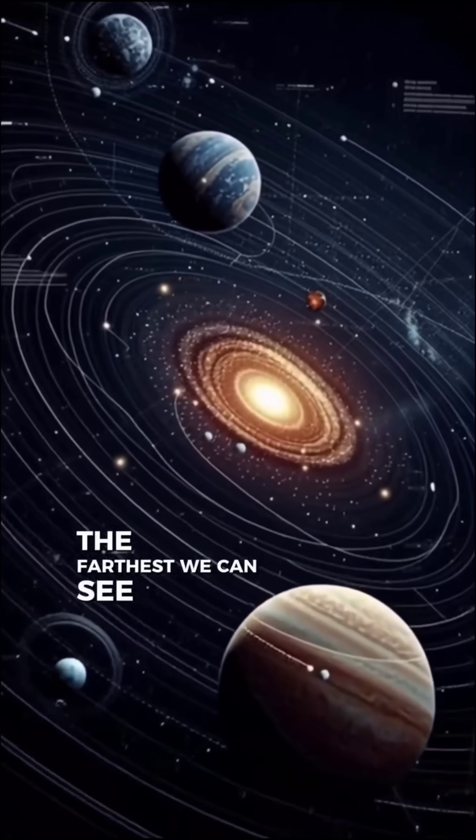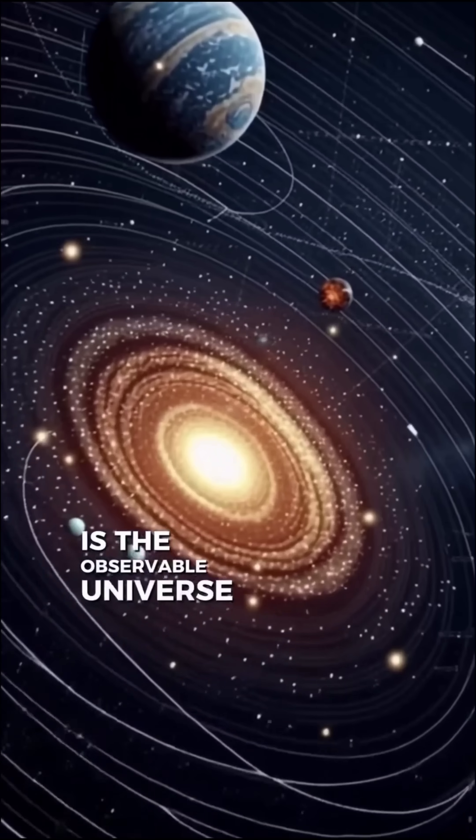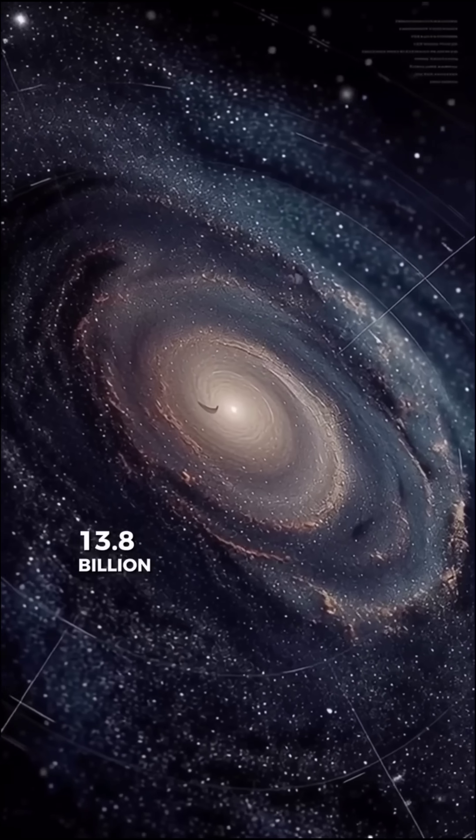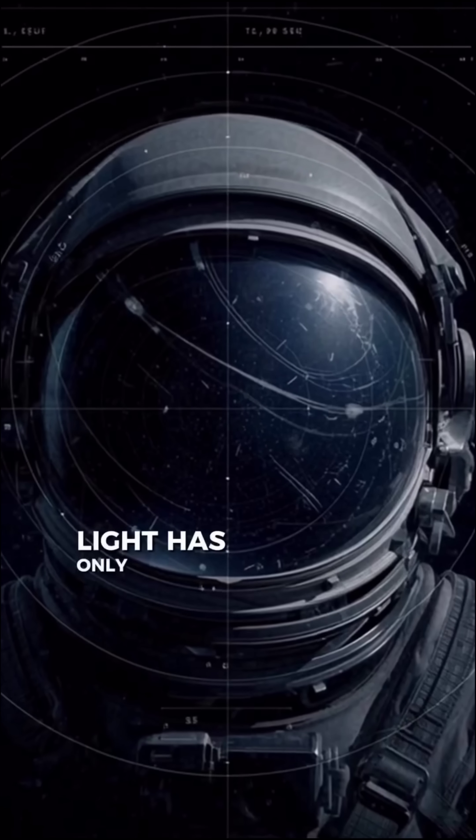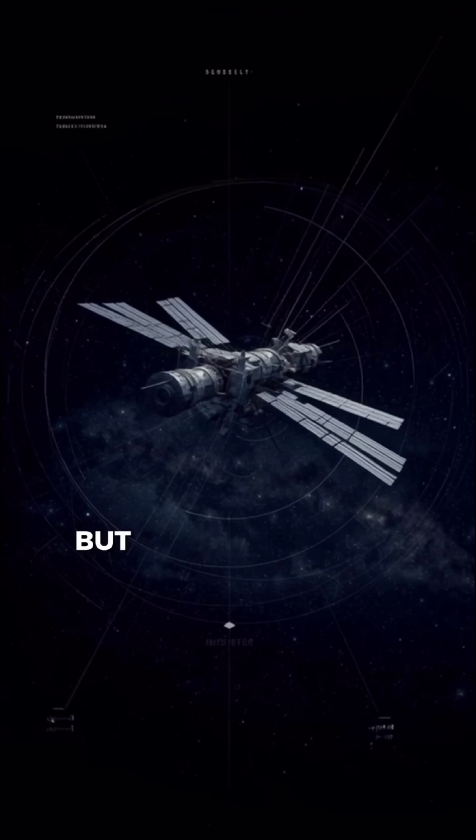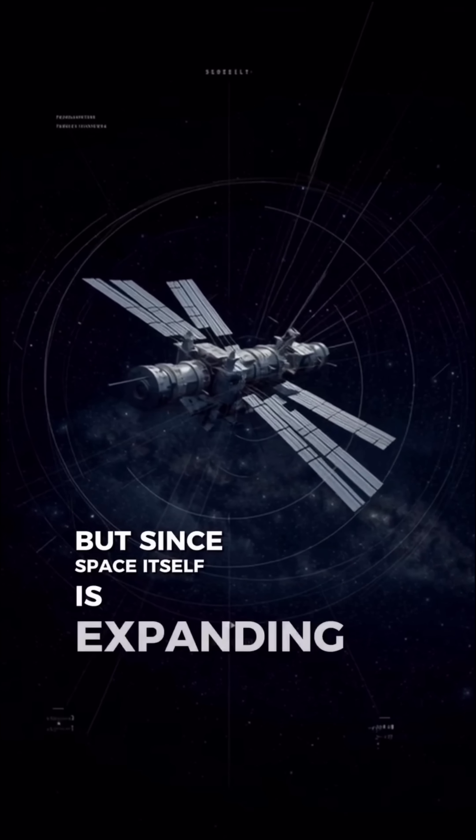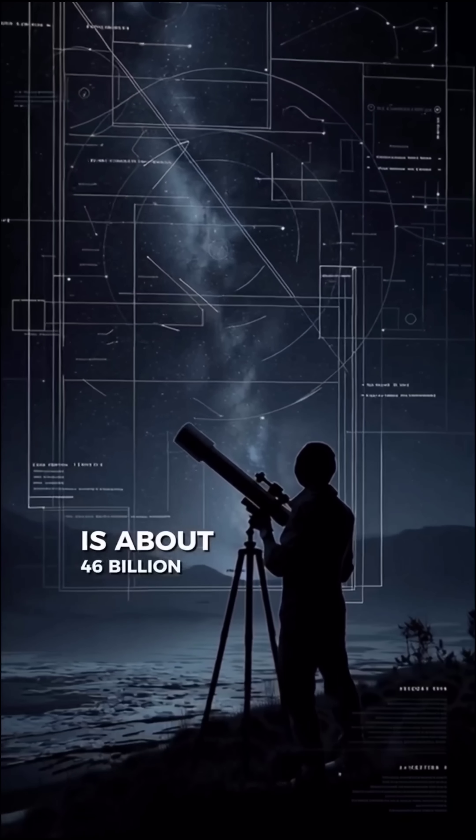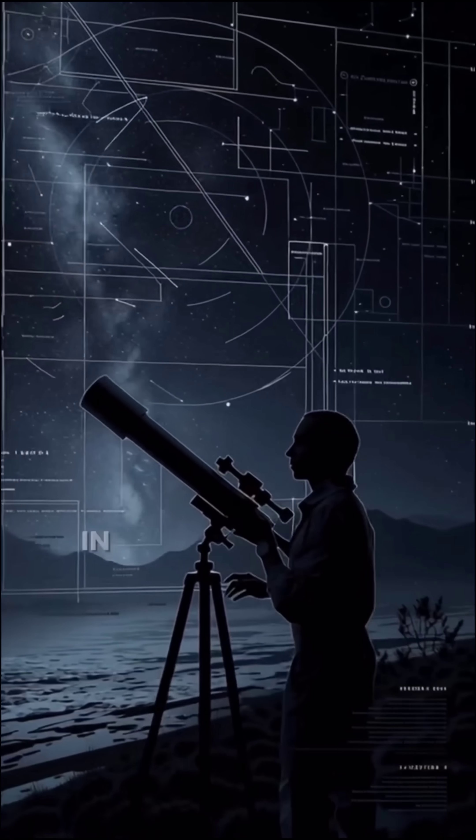The farthest we can see is the observable universe. Because the universe is 13.8 billion years old, light has only had that long to reach us. But since space itself is expanding, the edge we can observe is about 46 billion light-years away in every direction.